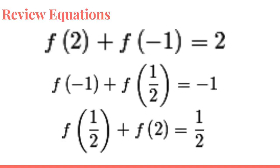So if we look at all of the equations, f(2) plus f(-1) equals 2, f(-1) plus f(1/2) equals -1, and f(1/2) plus f(2) equals 1/2. We have 3 equations and 3 unknowns: f(2), f(-1), f(1/2). We want to solve for f(2).